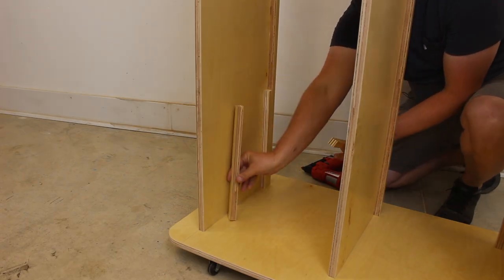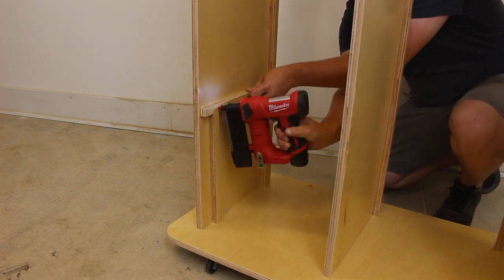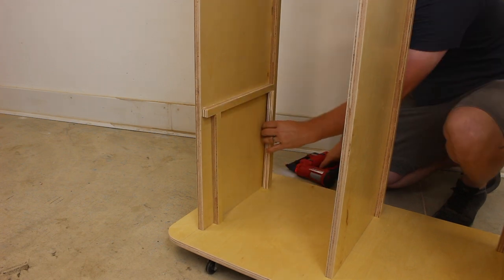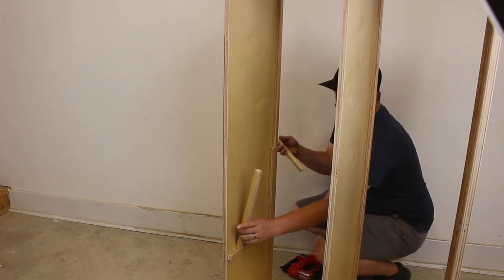To keep our bottom supports level and even, I cut a couple of spacer blocks at 13 and a quarter. This takes all the guesswork and measuring out of it and makes this part of the project go so much quicker.